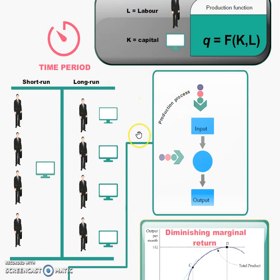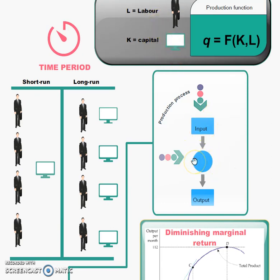We need inputs — labor and capital — which we put into our production process. The function is also technically the technology used to produce. The technology, combined with what the inputs are, will determine the quantity. We put in capital and labor, which are changed by the technology we have available, and then we have our output, which is Q.